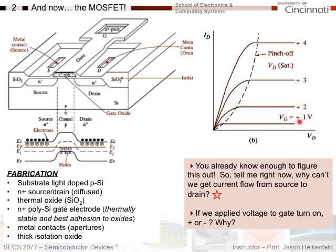If we put negative voltage on the gate, negative voltage raises the bands up, giving a bigger barrier, so you won't get current flow. Only positive voltage will turn this device on. This is oversimplified — you'll see it's more complex in terms of what's required to get electrons to flow from left to right.